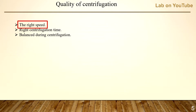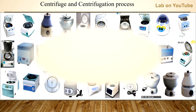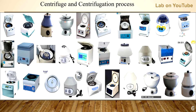Let's talk about the right speed. There are many types of centrifuges — different sizes, different motor angles, and different buckets. This variation means not all 3000 RPM readings are the same across all centrifuges.